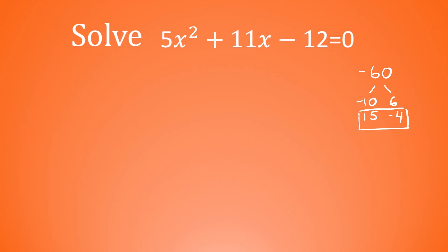This is where it gets a bit different. What we're going to do first is rewrite the equation — we'll leave the 5x squared as it is, but we're going to break that 11x down into two parts. We're going to break it into positive 15x and then negative 4x. 15x minus 4x is just 11x, so it's just another way of writing 11x. Take away 12 is equal to 0. Then we're going to break this up into two parts and factorize each of them separately.